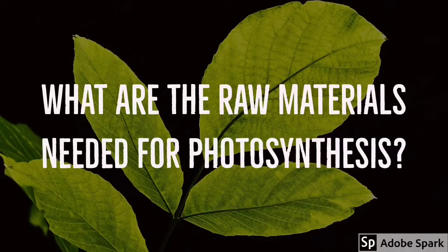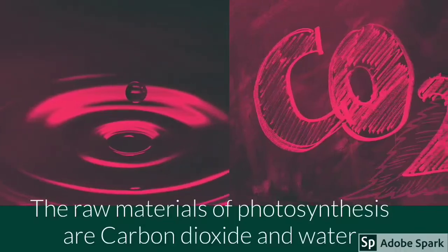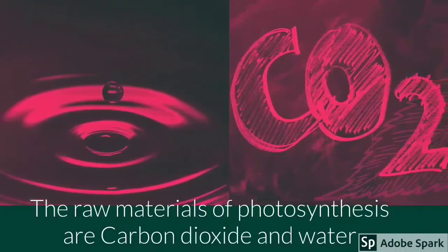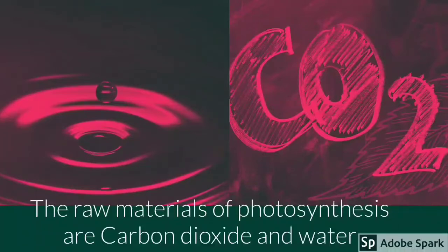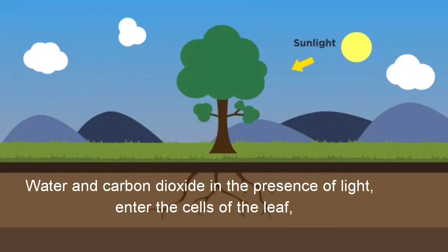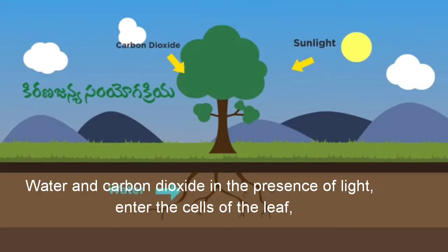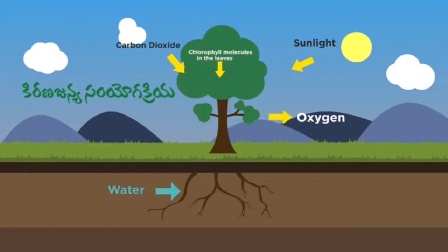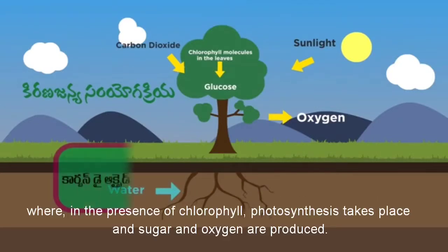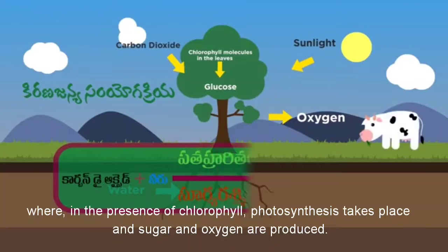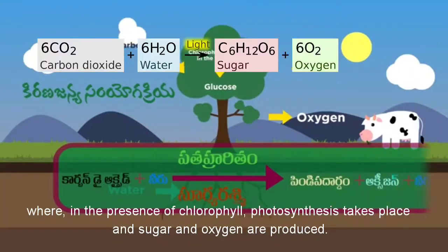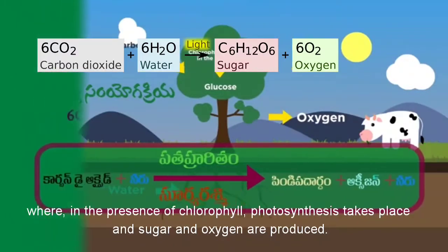The raw materials needed for photosynthesis are carbon dioxide and water. In the presence of light, these enter the cells of the leaf, where in the presence of chlorophyll, photosynthesis takes place, and sugar and oxygen are produced.